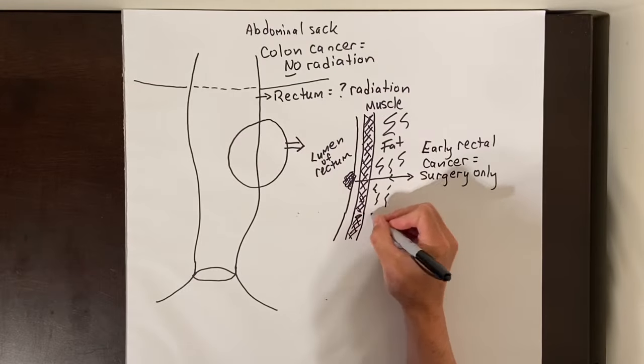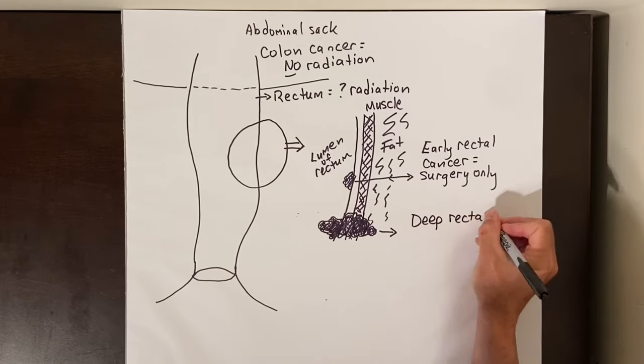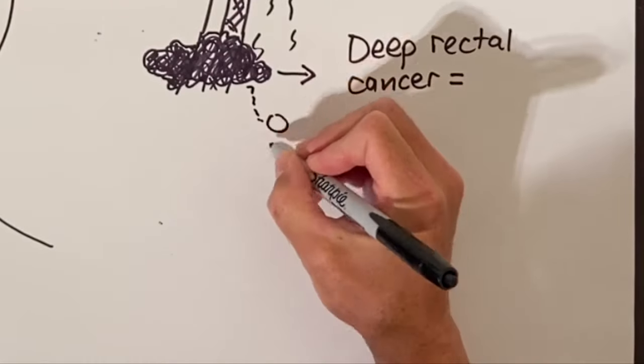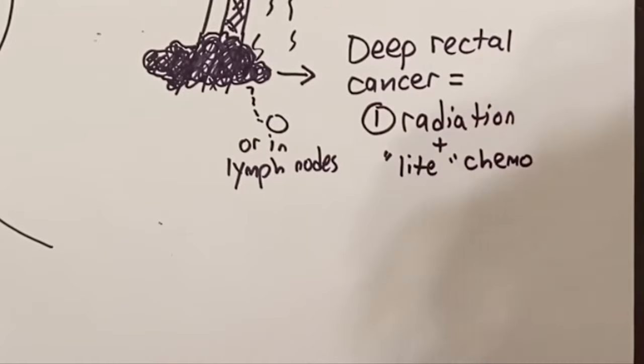But if the cancer is growing deep into the wall of the rectum through this muscle layer, or if it looks like it's already in lymph nodes on x-rays, then we will commonly use radiation before surgery. Radiation helps shrink the tumor, making surgery easier, and it can decrease the regrowth rate of the tumor.